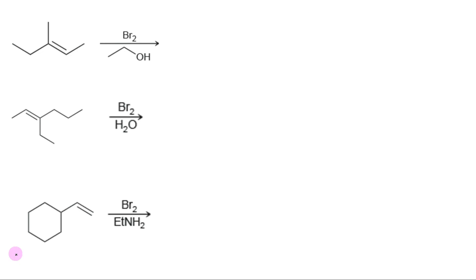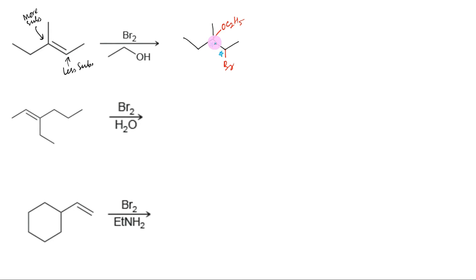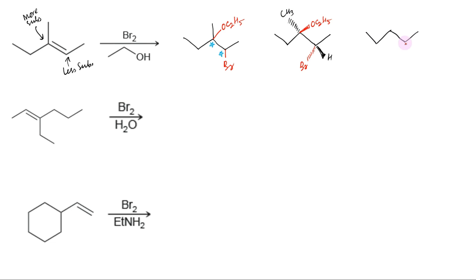Consider the following examples. The first step is to consider the regiochemistry: this is the less substituted end and this is the more substituted end. Therefore, bromine is placed on the less substituted carbon and the ethoxy group is placed on the more substituted carbon. Now consider stereochemistry. Since two chirality centers are generated, the product can exist in four stereoisomers. Only the enantiomers in which bromine and the nucleophile are anti to each other will be formed. In one, bromine will be down the plane so that the ethoxy group is above the plane, with hydrogen above the plane and methyl down the plane. The other enantiomer will have stereochemistry opposite to the first one.